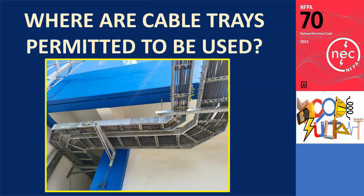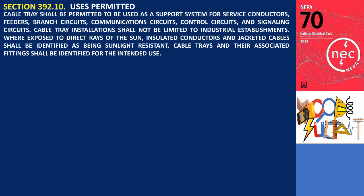Where are cable trays permitted to be used? Section 392.10 states that cable trays shall be permitted to be used as a support system for service conductors, feeders, branch circuits, communication circuits, control circuits, and signaling circuits. Cable tray installations shall not be limited to industrial establishments. Where exposed to direct rays of the sun, insulated conductors and jacketed cables shall be identified as being sunlight resistant. Cable trays and their associated fittings shall be identified for the intended use.